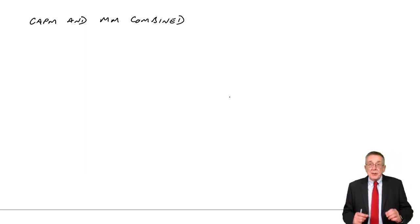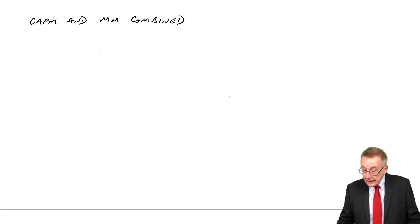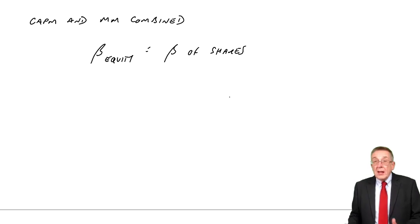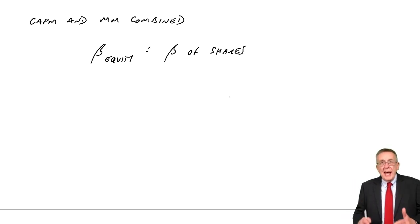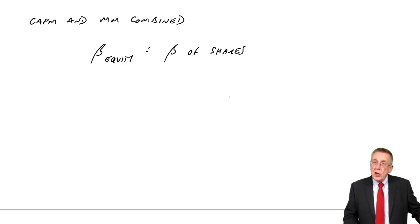In capital asset pricing model, we have betas. The betas that are published are what we call the betas of equity — the betas of shares — and they measure the risk of a share. Shares are more risky when there's gearing than if there's no gearing.